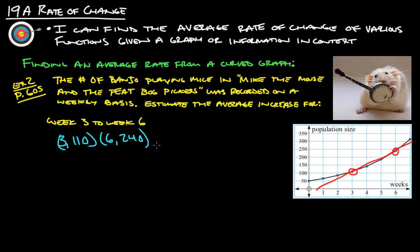So really all we need to do is just find the slope of that, because slope is the same thing as a rate. So that's 240 minus 110 over six minus three. So 240 minus 110 is 130 over three.